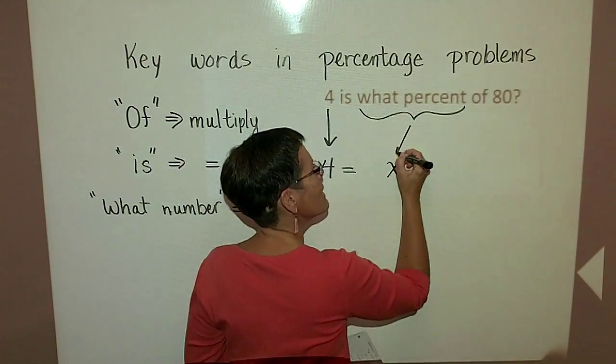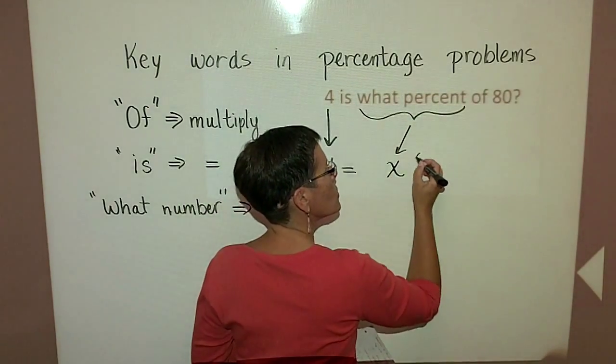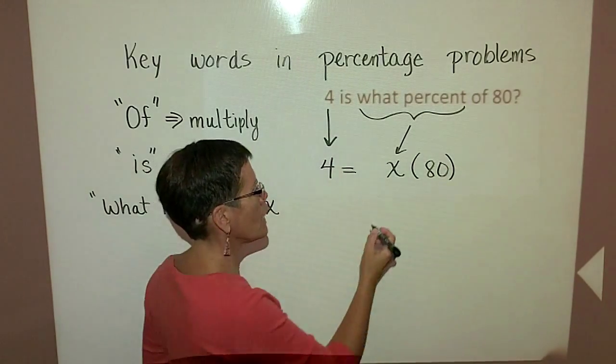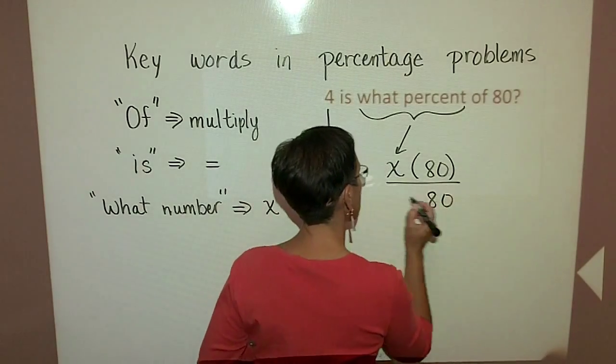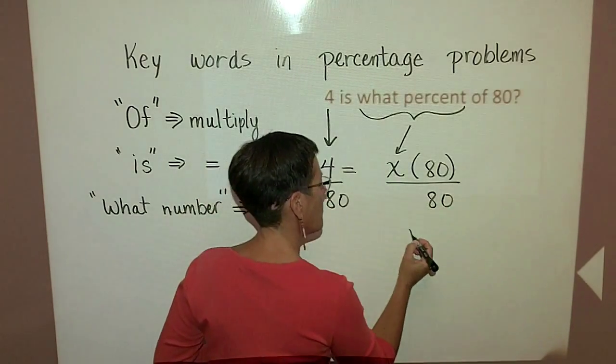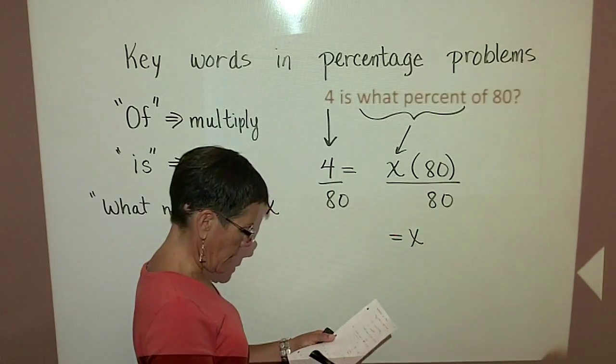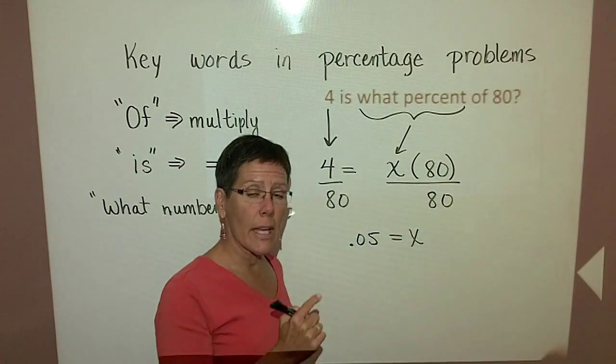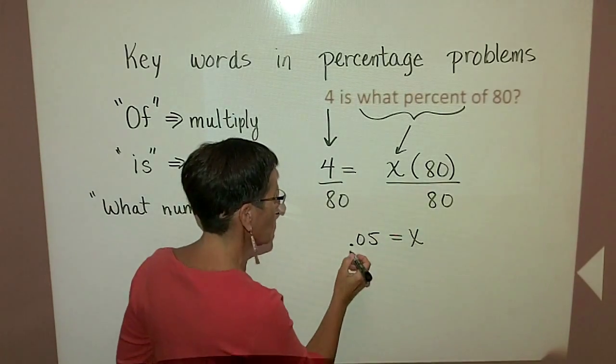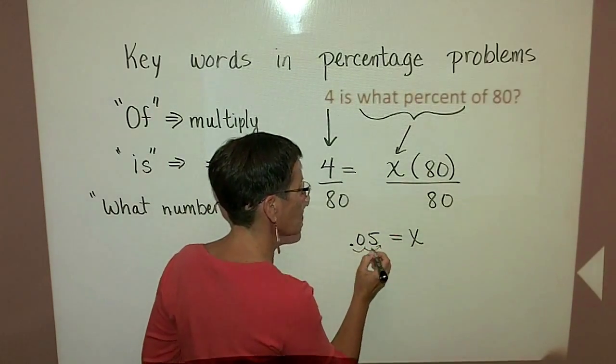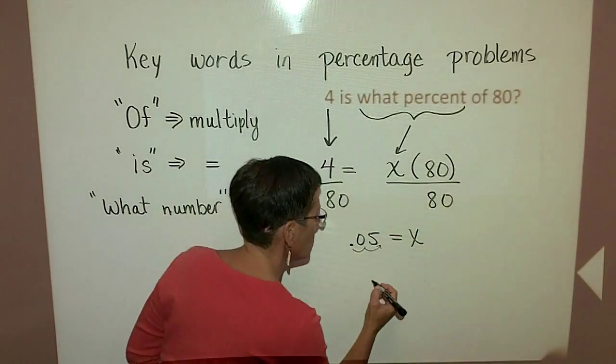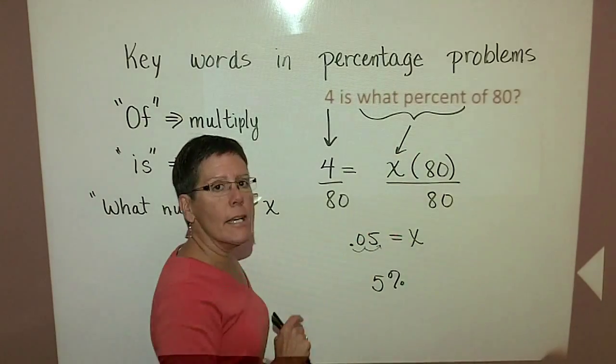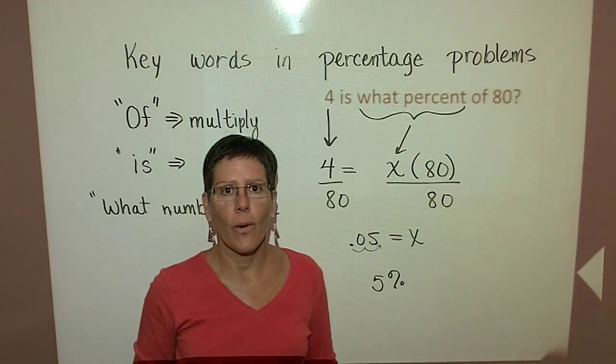So that will be X of 80. So I want to multiply by 80. And in order to solve for X, I have to divide both sides by 80. And I find out that X is, as a decimal value, it's 0.05. And when I want to put that percentage symbol on this number, I have to multiply by 100 or move two places to the right. And I would say that 5% of 80 is that value of 4.